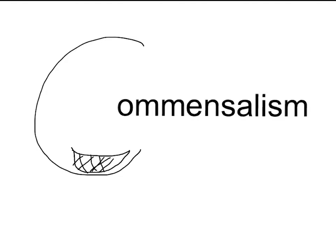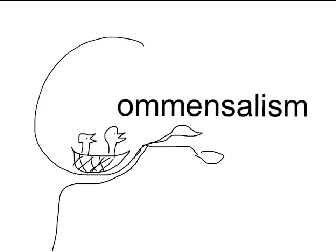Here's a way to help you remember commensalism: think of a bird's nest in a tree with hungry baby birds waiting for mommy to come back. In this relationship, the birds benefit — they have a safe place to raise their young, protected from weather and predators. But the tree itself does not benefit from this relationship, and it's not hurt by it either. So in commensalism, one organism benefits and the other doesn't benefit, but is also not harmed.